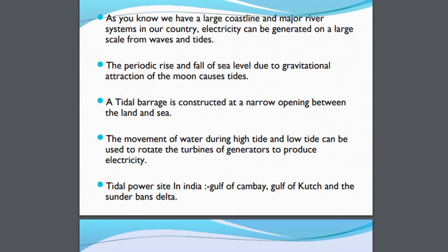India has almost 6000 km of mainland coastline, so with such a huge coastline and daily series of high and low tides, we should use this sea power in generating electricity. The periodic rise and fall of sea level due to gravitational attraction of the moon causes these tides. A tidal barrage is constructed at a narrow opening between land and sea, and the movement of water during high tide and low tide can be used to rotate the turbines of generators to produce electricity. In India, tidal power sites are in the Gulf of Khambhat, Gulf of Gujarat and the Sundarbans delta.